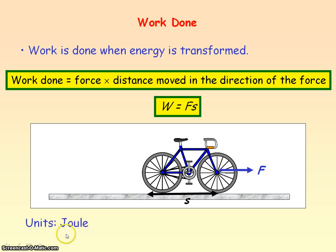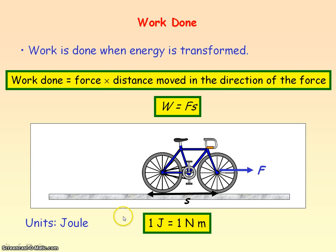The unit of work done is the joule, and you need to know the definition of joule, which comes from the definition of work done. One joule is equal to the unit of force, which is the Newton, times the unit of distance moved, which is in meters. So one joule equals one Newton meter — that is, one joule is the work done when a force of one Newton moves its point of application through a distance of one meter in the direction of the force.